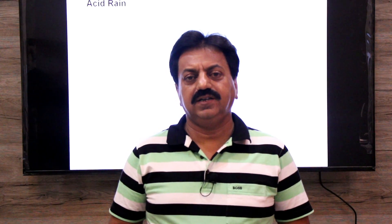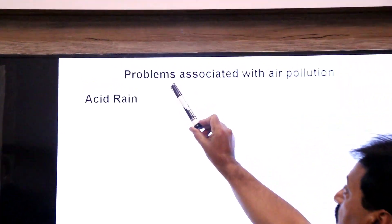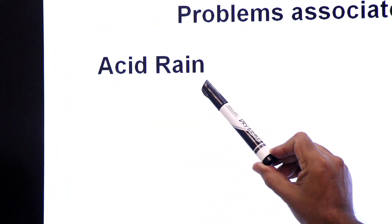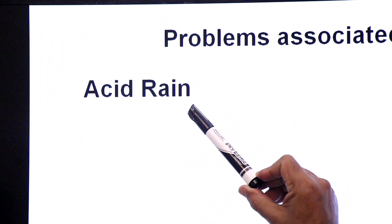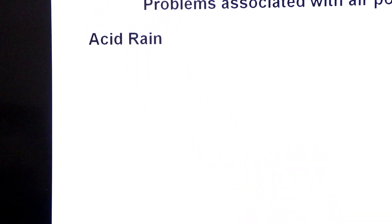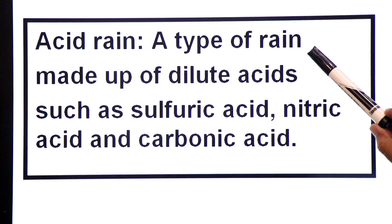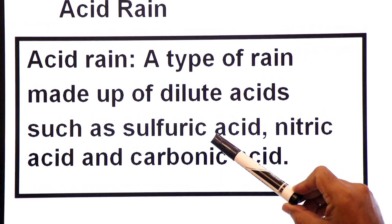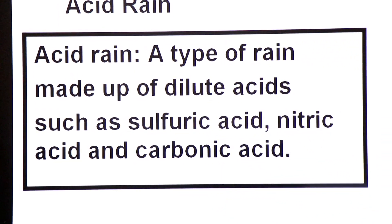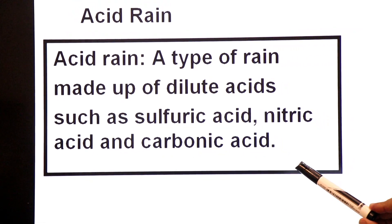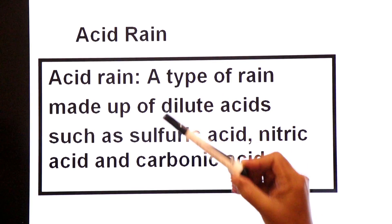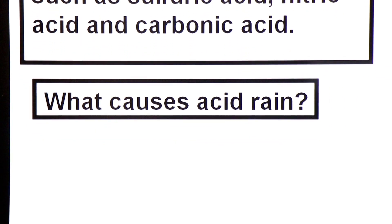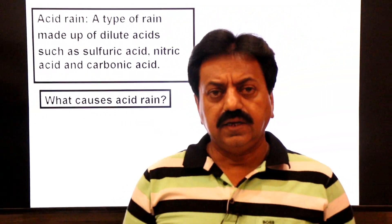Assalamu alaikum, namaskar dear students. We are discussing problems associated with air pollution, and today in this lecture we are going to talk about acid rain. First of all, definition: what is acid rain? A type of rain made up of dilute acids such as sulfuric acid, nitric acid, and carbonic acid. When rain contains these acids, such rain is called acid rain.